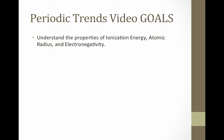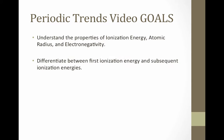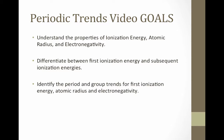By the end of this video, you should understand the properties of ionization energy, atomic radius, and electronegativity. You should be able to differentiate between first ionization energy and subsequent ionization energies. You should be able to identify the period and group trends for first ionization energy, atomic radius, and electronegativity, and explain those trends in terms of atomic structure.